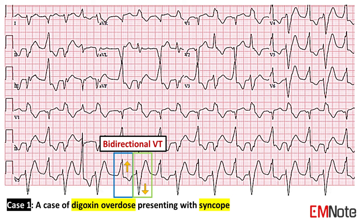Bidirectional VT may also be the presenting rhythm in patients with familial catecholaminergic polymorphic ventricular tachycardia, CPVT.